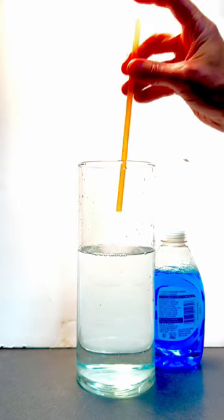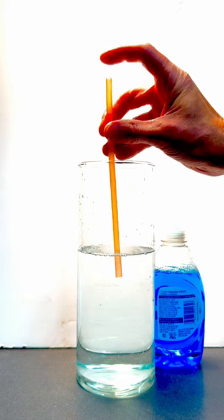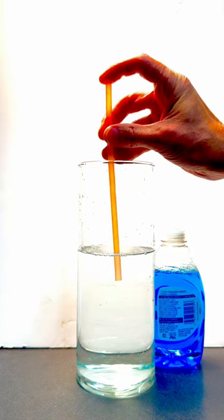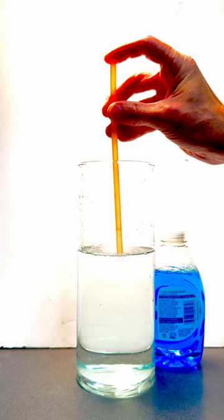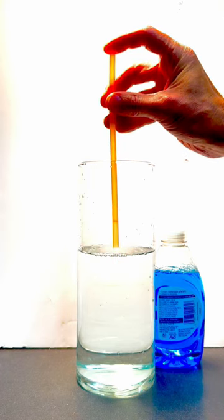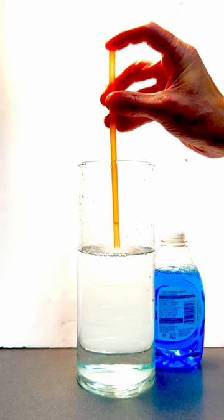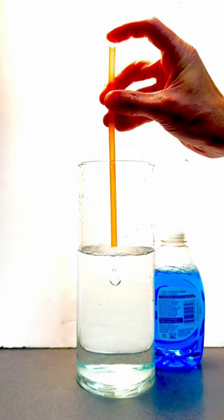Take a straw and dip it into the water about two centimeters deep. Then place your finger over the straw to trap the soapy water in the straw. Pull the straw out of the water and hold it just a little bit above the water surface. Release your finger and let the soapy water fall into the water. There it is! I made an antibubble!